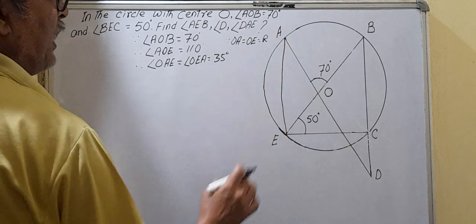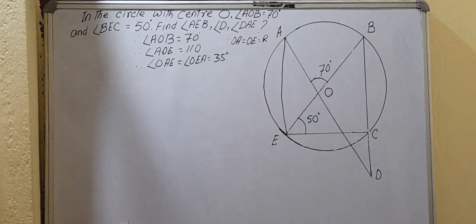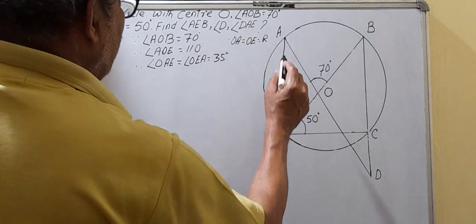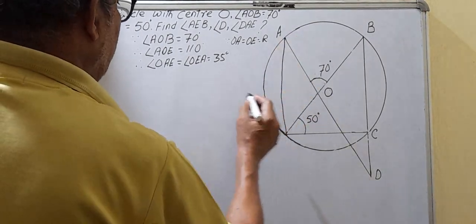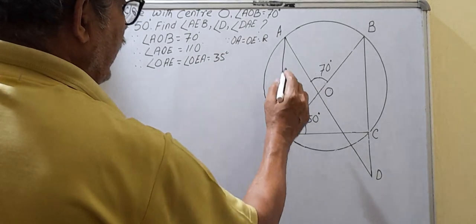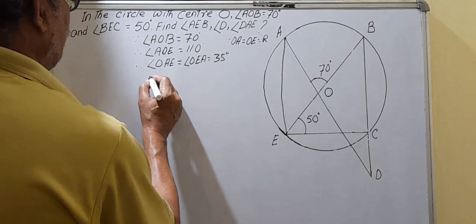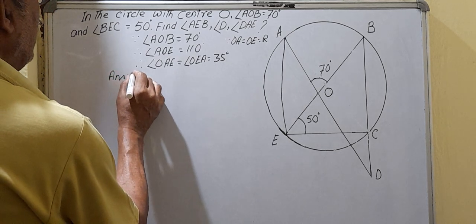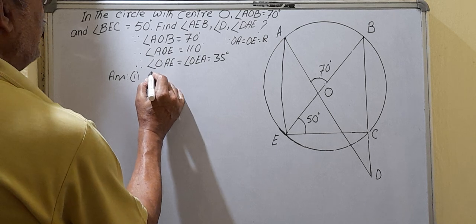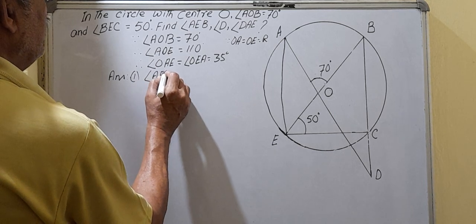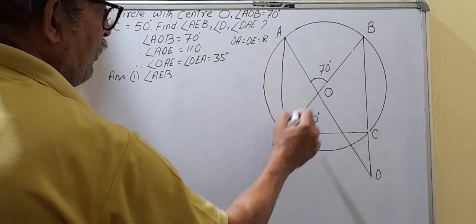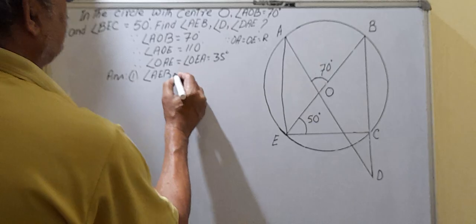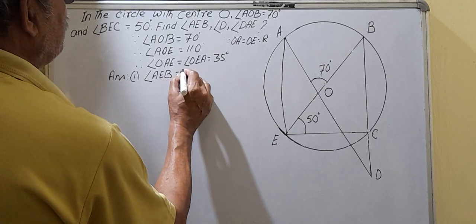Triangle OAE is an isosceles triangle. Angle OEA and angle AEB are the same angle. Therefore the first answer: angle AEB = 35 degrees.